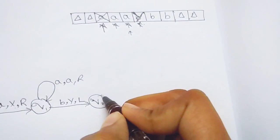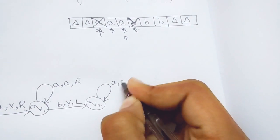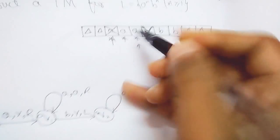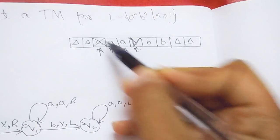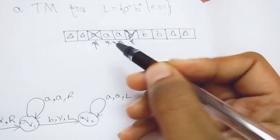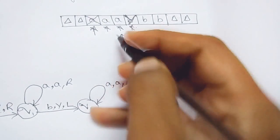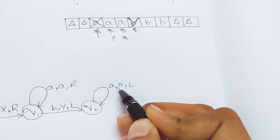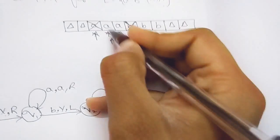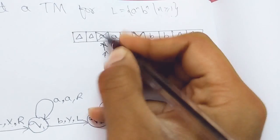In state q2, wherever the machine sees A, replace it with A and move left, because I have to come back to X — that marker tells me this A is already processed — so I can then process the next A. The header moves left, seeing A replaced with A, until it reaches X.